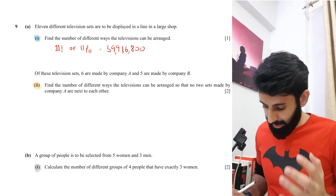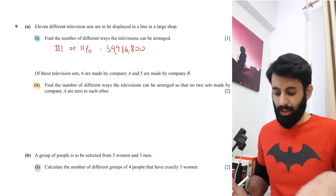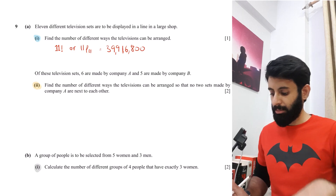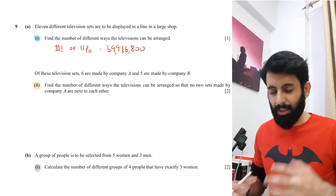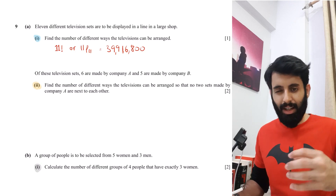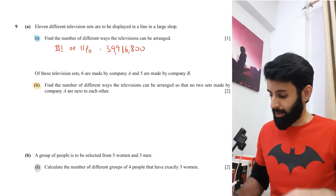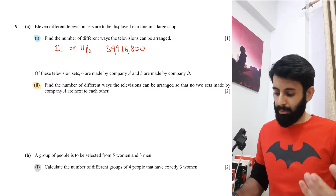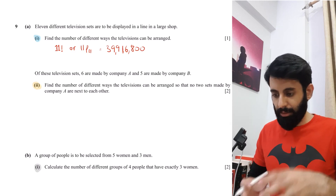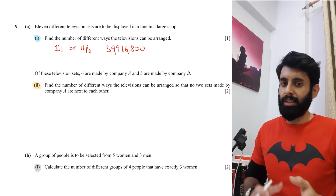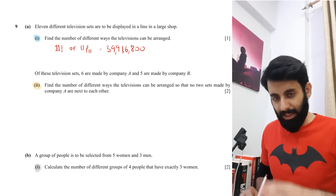Then it says: of these television sets, six are made by company A and five are made by company B. Find the number of different ways the televisions can be arranged so that no two sets made by company A are next to each other. This is a concept I wasn't able to cover in the last video. There's a restriction — you can't have two sets made by company A next to each other, which means you can't have three, four, five, or six either. So whenever you have a television set of company A, on the right and left side of it there must be a television set of company B.